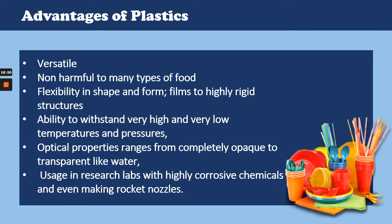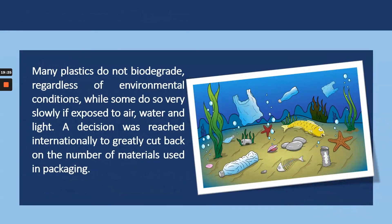All these plastics are popular because they are versatile, inert and can be used for packaging and storing food. They have flexibility, the ability to withstand high and low temperatures and pressures, varied optical properties — from opaque to transparent or translucent — and can even be used in research labs working with highly corrosive chemicals. But these very properties that make plastics so popular lead to the problems associated with plastics. Most plastics do not degrade. Polystyrene, for example, is a plastic that takes around 500 years to degrade, which means the polystyrene containers we use for storing food will be present on earth long after we have gone.